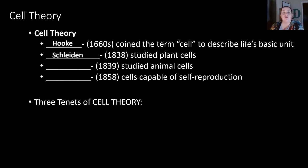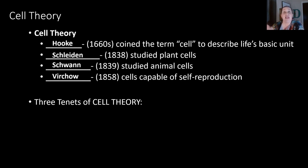We also see two other individuals in the 1830s who contributed. Schleiden in 1838 studied plant cells, and Schwann in 1839 studied animal cells. They both determined that plants and animals were made out of cells. Then Virchow in 1858 told us that cells were capable of self-reproduction. We now know this is mitosis and meiosis, but this helped develop the three tenets of the cell theory.